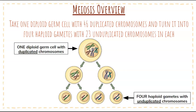So meiosis is the process of making these gametes — sperm if you're male, or eggs if you are female. With meiosis, you start with one diploid germ cell. So you're going to start with a cell that has two copies, one from mom and one from dad — 46 duplicated chromosomes, after interphase where you've already duplicated in the S phase. We start with 46 duplicated chromosomes and we end up with 23 unduplicated chromosomes. We start with one diploid cell and we end with four haploid cells. One becomes four.